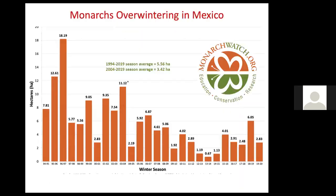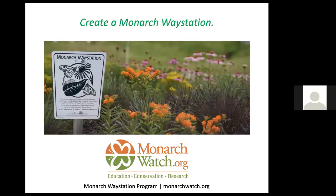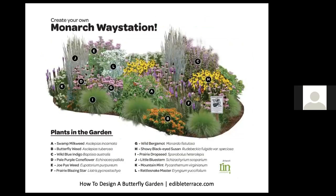Monarchwatch.org has monitored populations of monarchs overwintering in Mexico and found steadily declining numbers, due primarily to glyphosate use in herbicide-resistant GMO crops, which kills the milkweed monarchs depend on. Pesticide use, climate change, and logging and development have also reduced their numbers. You can proudly proclaim you're helping monarchs by ordering a monarch waystation sign from Monarch Watch — an example is offered at edibleterrace.com. Notice how flowers in the garden are bunched in clumps of the same species, so pollinators can easily find the next plant they're looking for, benefiting both the plants and the pollinators.